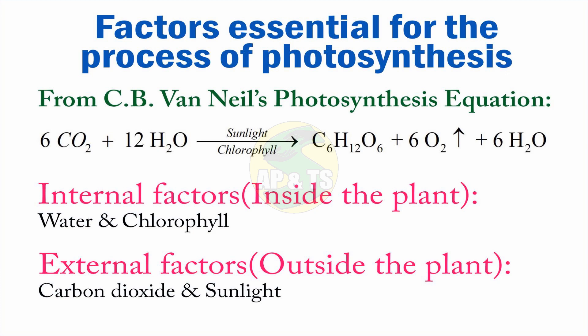Coming to the external factors — these are not present in the plant body; they are taken by the plant from outside. Those are carbon dioxide and sunlight. Carbon dioxide comes from the atmosphere, and sunlight comes from the sun, so they are not already present in the plant body; they are obtained from outside.